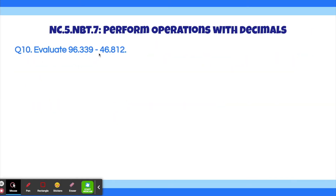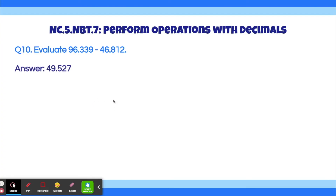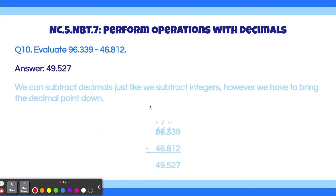Question 10. Evaluate 96.339 minus 46.812. The answer is 49.527. We can subtract decimals just like normal integers; we just drag the decimal point down into the answer. Using long subtraction: 9 minus 2 is 7; 3 minus 1 is 2; borrow to make 13 minus 8 equals 5; borrow again so 15 minus 6 equals 9; 8 minus 4 equals 4. We get 49527, then place the decimal to get 49.527, which is our final answer.